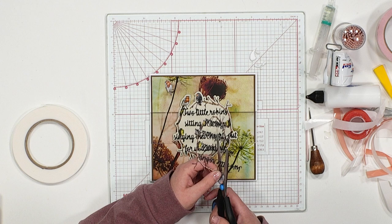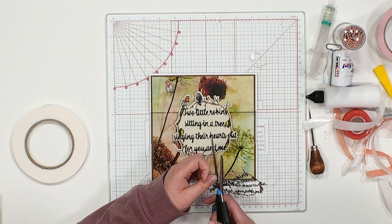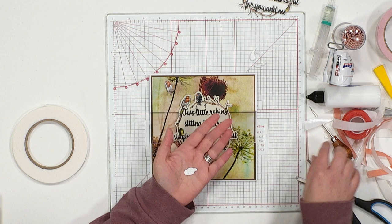And then this little chappie, we're just going to go round and release him from his branch too. Again, not a step you have to do, it's just if you want to give those robins a little bit more prominence. The sentiment can go in my stash for another day.